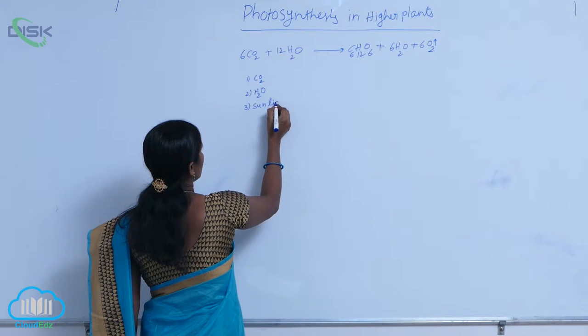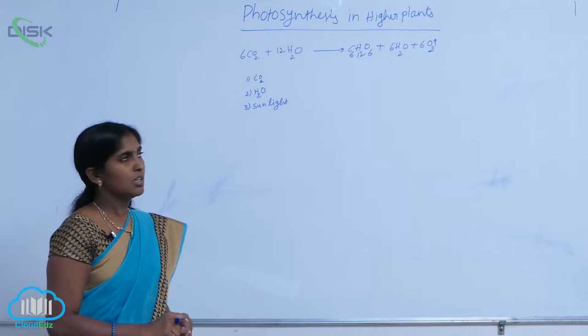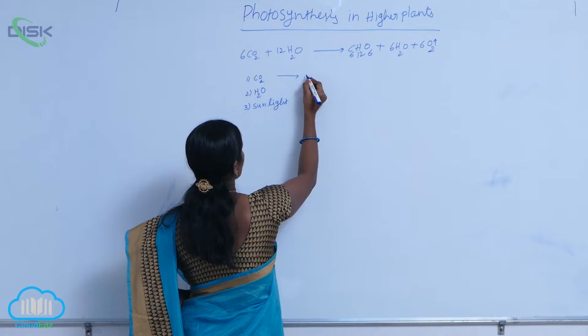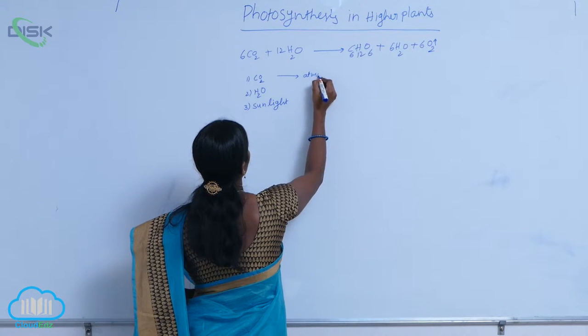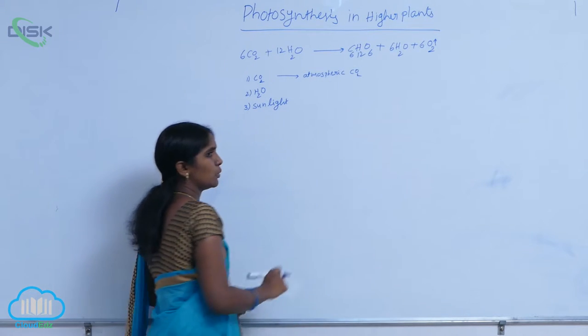In the presence of sunlight, photosynthesis is carried out. You see here, the source of CO2 is atmospheric CO2.